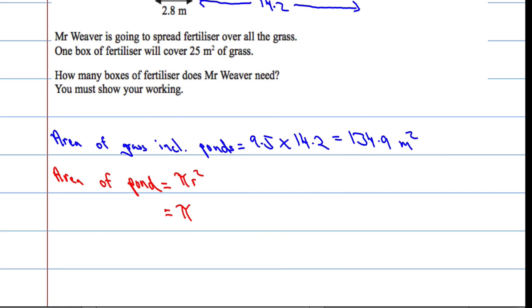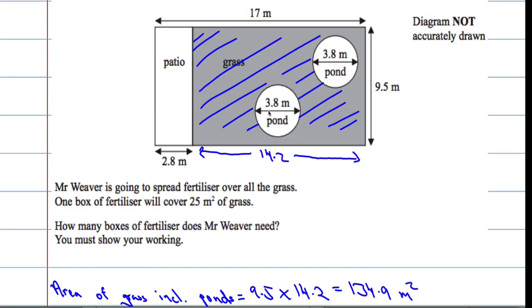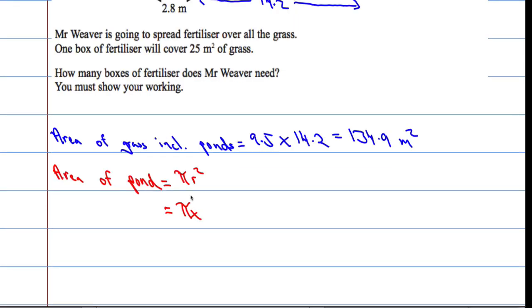Which would be pi times, and if we know the diameter is 3.8, the radius must be half of that. The radius must be half of 3.8, which is going to be 1.9. Pi times 1.9 squared.